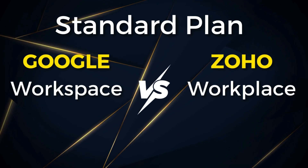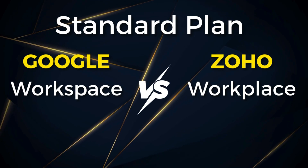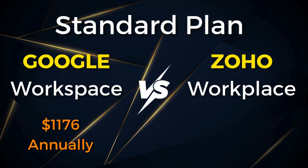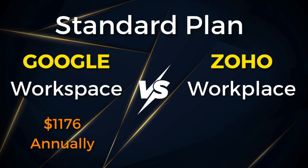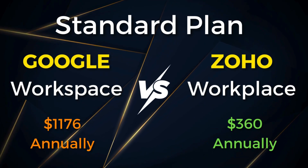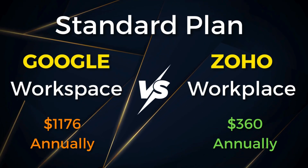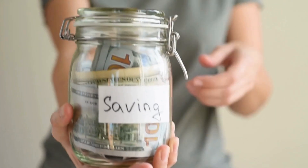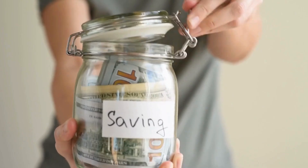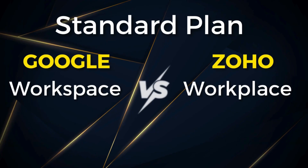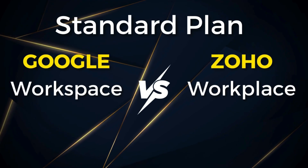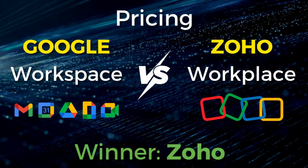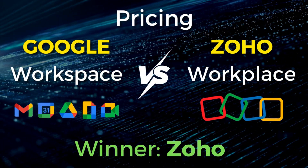A team of 10 people using Google Workspace will cost your small business $1,176 USD per year. However, with Zoho Workplace this will cost your team only $360. That's a huge price saving for a small business. This is in reference to both standard plans, which is ideal for most small businesses. Zoho Workplace is significantly more affordable than Google Workspace.